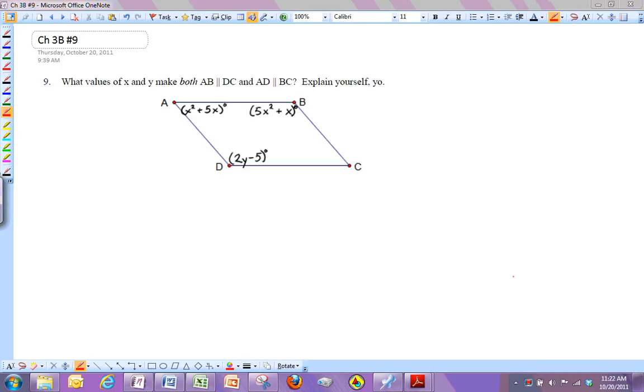Chapter 3b, number 9. In this one, we want to try and get parallel lines. And so the ways that we get parallel lines: if you show that corresponding angles are congruent, you get parallel. Alternate interior angles that are congruent give you parallel lines.